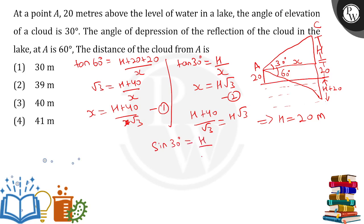And sine of 30 degrees is 1 by 2. The value of h I have calculated as 20 upon AC. From here, the value of AC comes out to be 2 into 20. That means 40 meters. Our final answer, which is option number 3 over here.